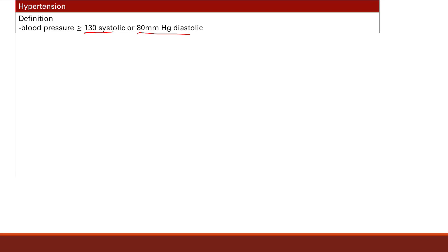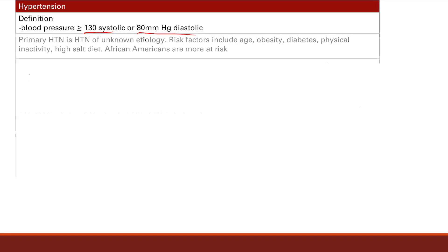There are two types of hypertension: primary and secondary. Primary is hypertension of an unknown etiology — it's just the primary cause. There are multiple risk factors for this, including age, obesity, diabetes, physical inactivity, and a high salt diet. A lot of these are modifiable risk factors.